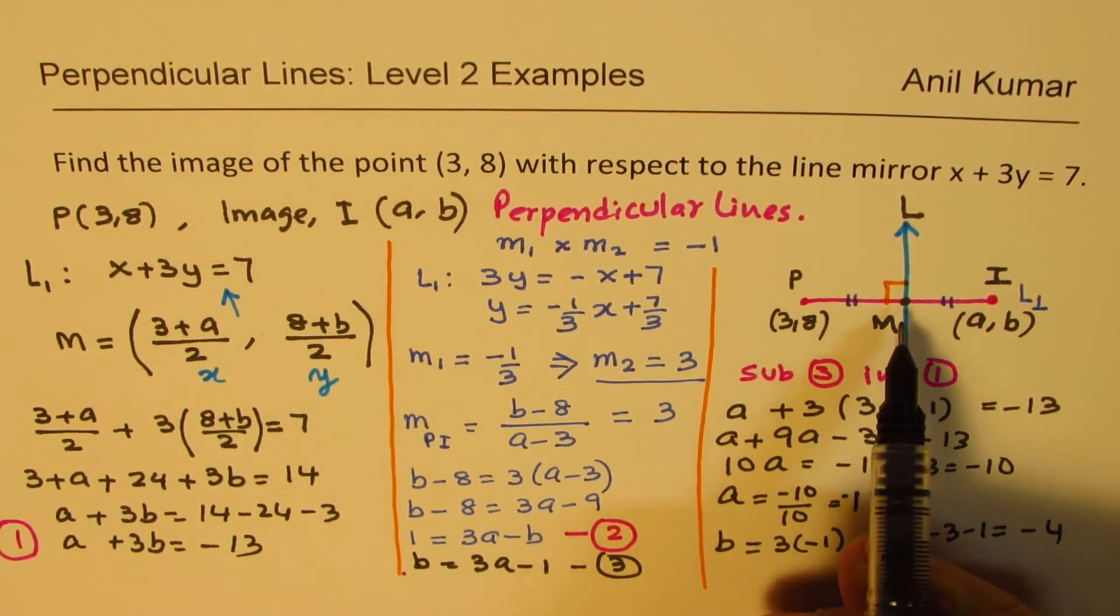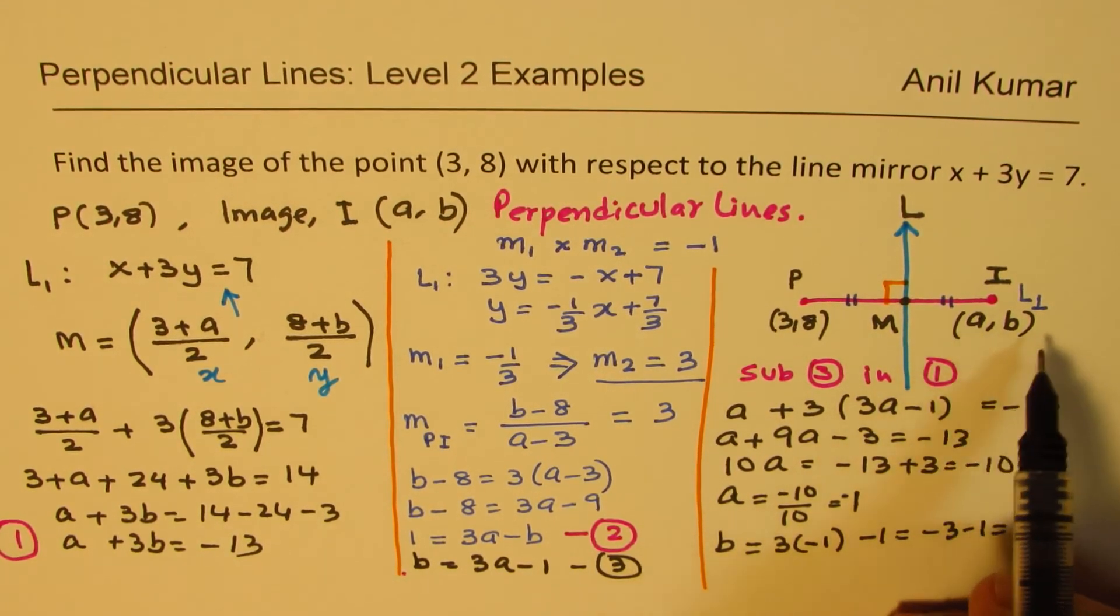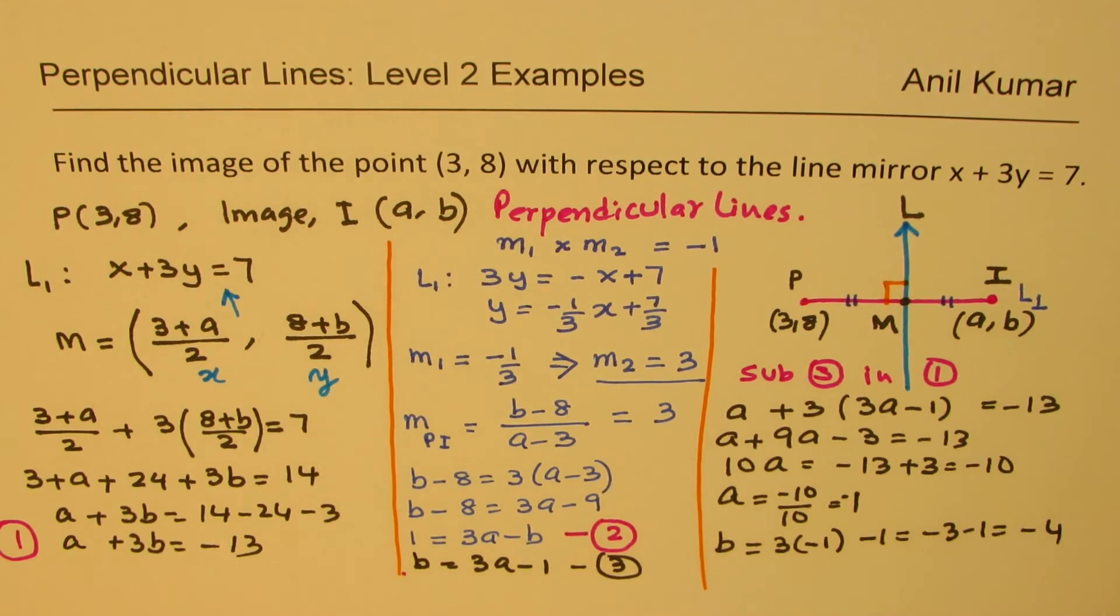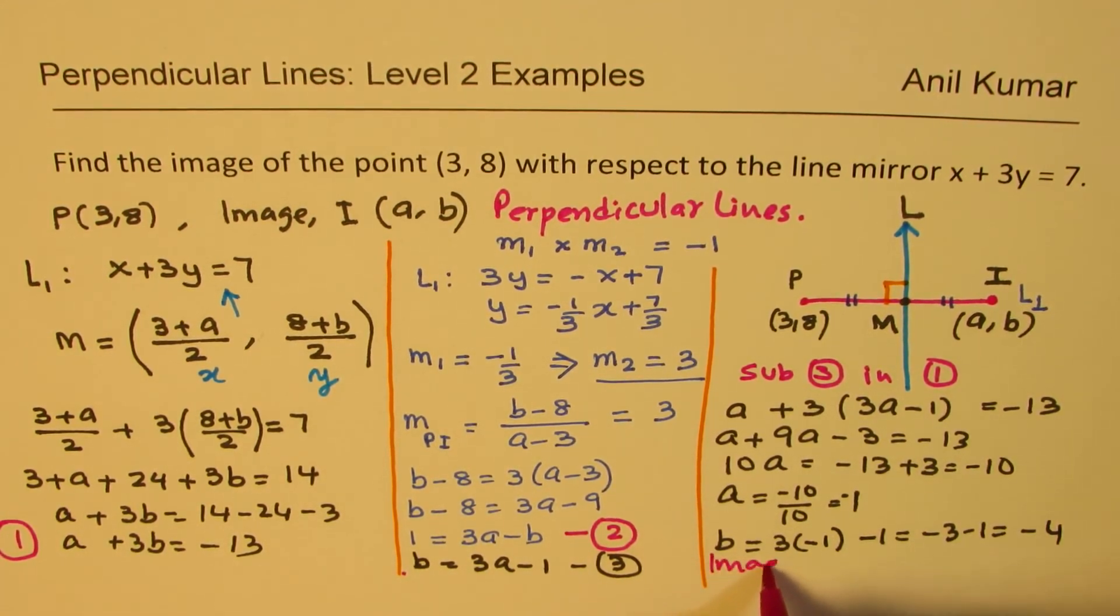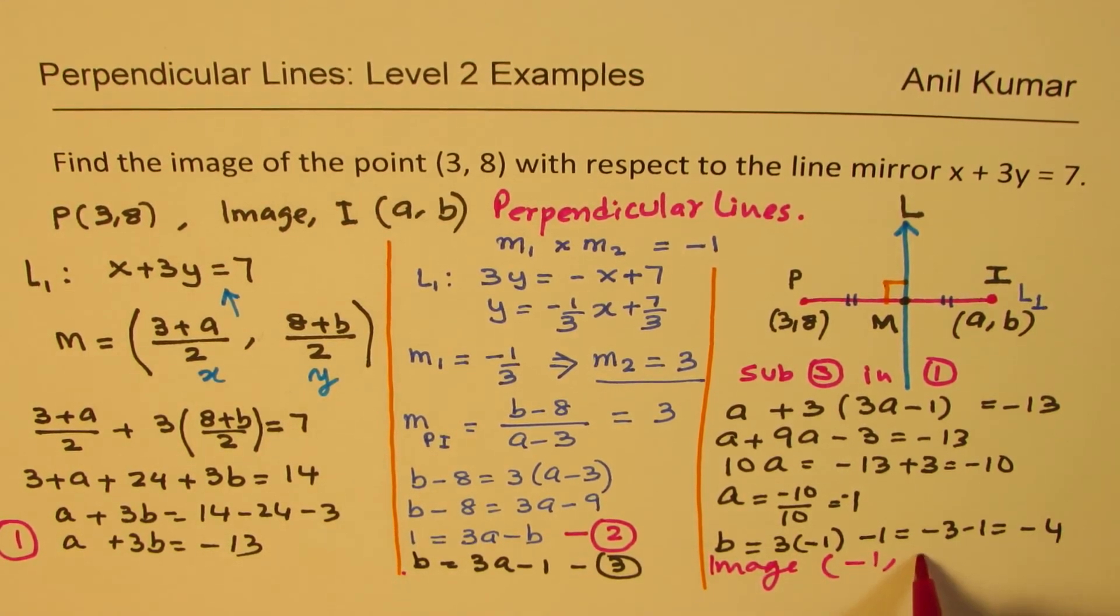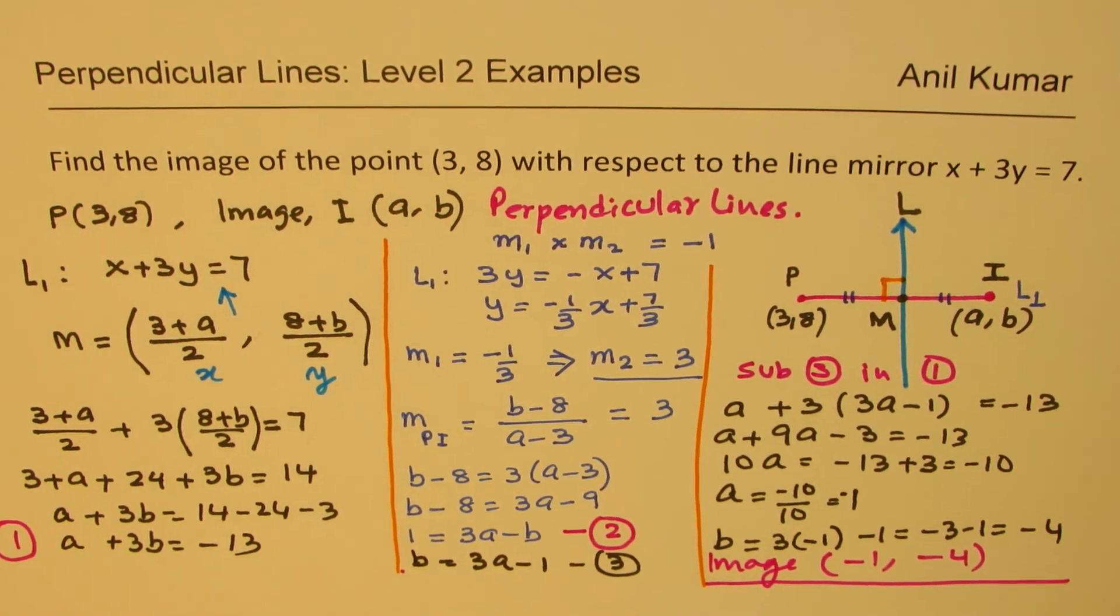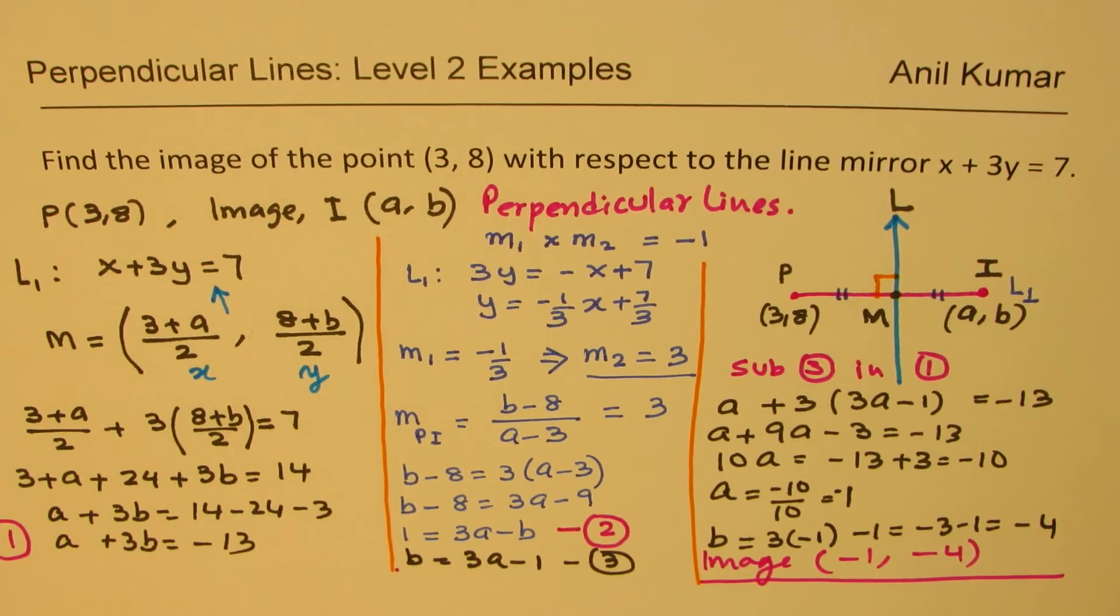So that gives us the point. So we get the image of the point. And so our answer here is that the image is: coordinates of a is -1 and b is -4. Does it make sense to you? So that is how we could actually solve this question. So let's go through this strategy once again.